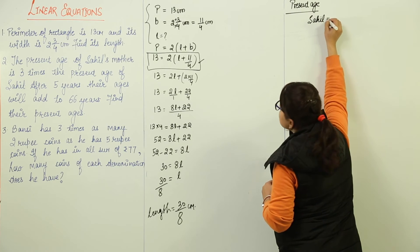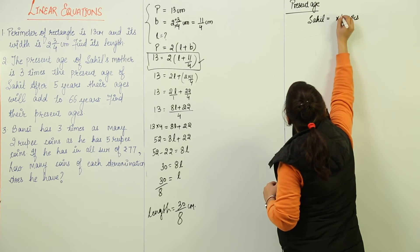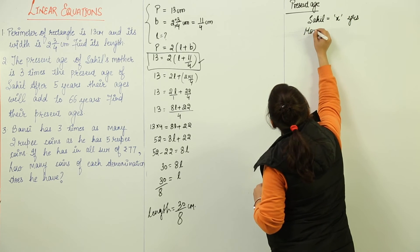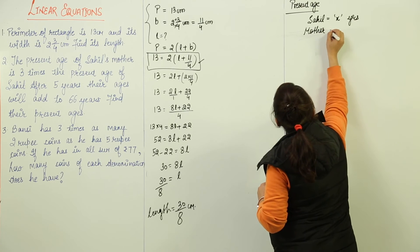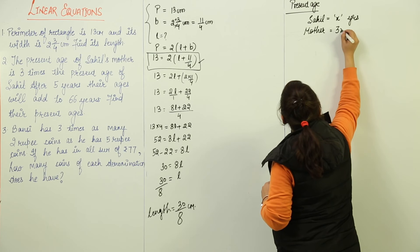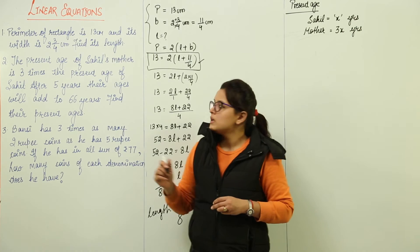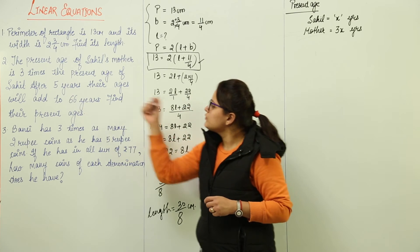The Sahil's age is say X years. Now what will be his mother's age? His mother's age is 3 times his age. So if Sahil is X, 3 times his age means 3X years.